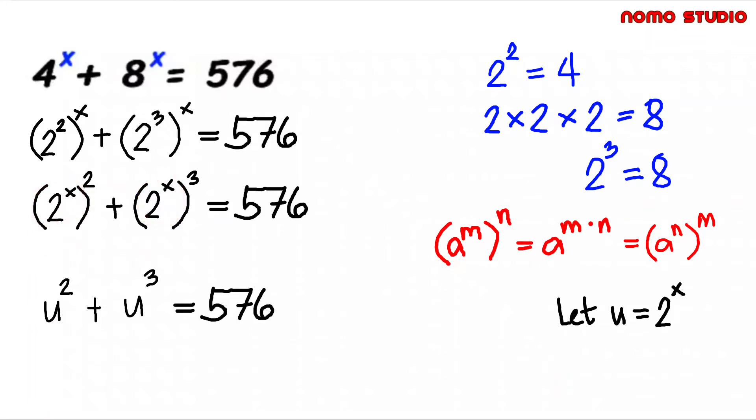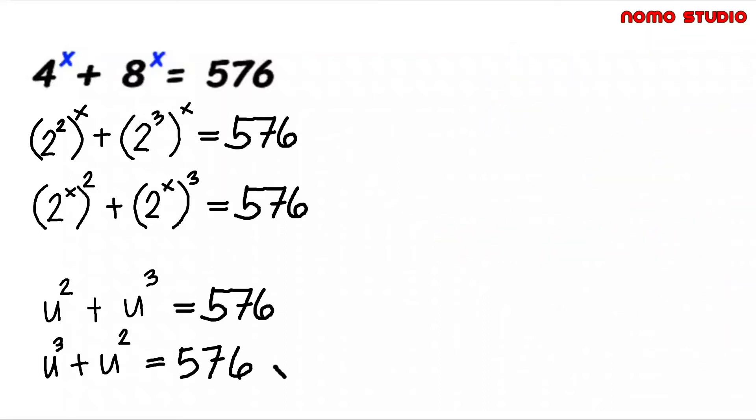Let's just arrange this one—higher term must be first written from the left. Now let's transpose 576 to the left side and that will be u cube plus u squared minus 576 equal to zero.